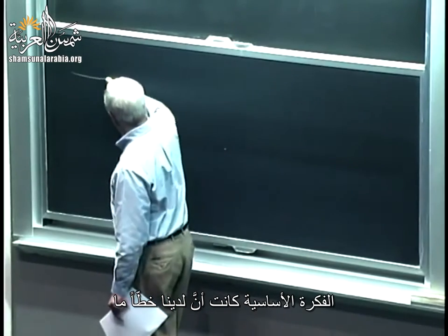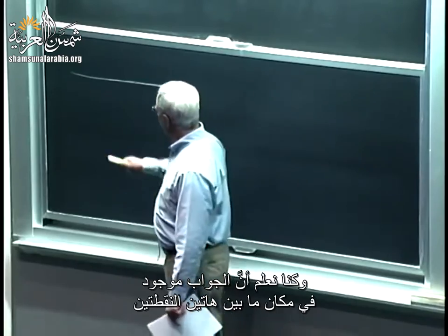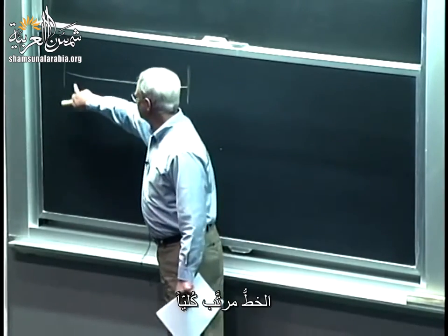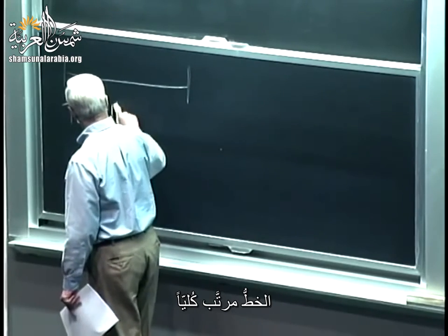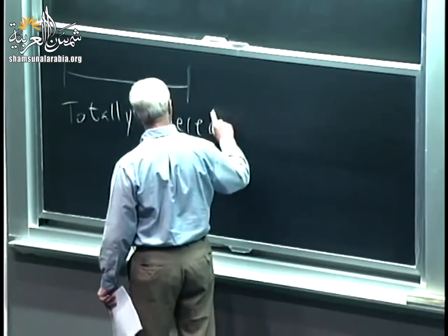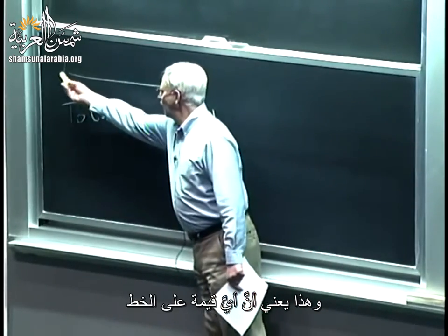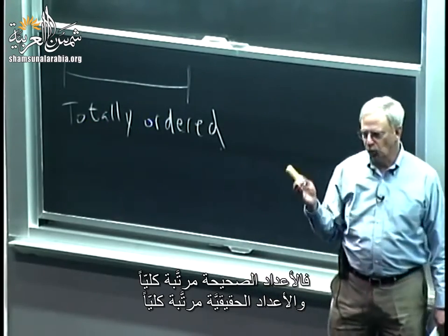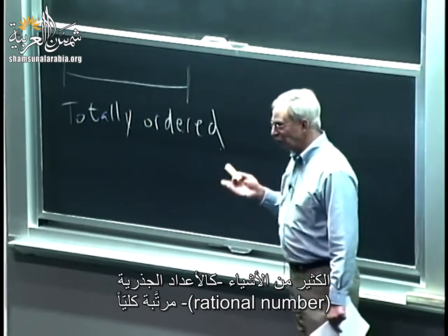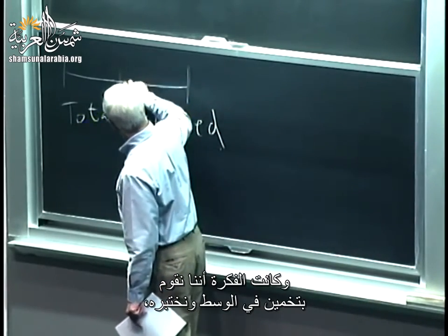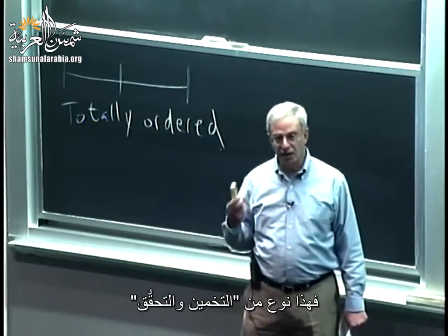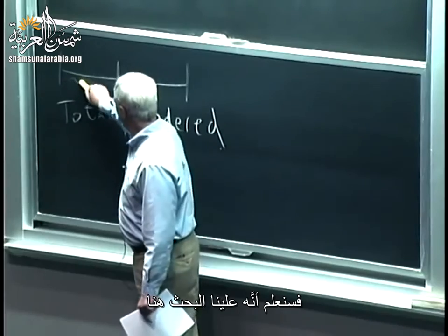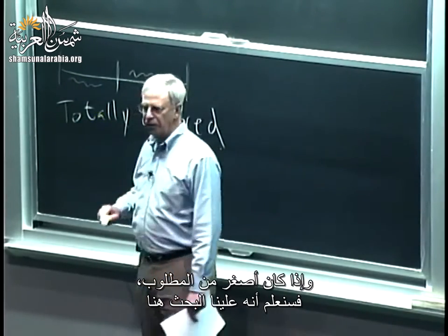The basic idea was that we had some sort of a line, and we knew the answer was somewhere between this point and this point. The line is totally ordered, and what that means is that anything here is smaller than anything to its right. So the integers are totally ordered, the reals are totally ordered, the rationals are totally ordered. The idea was we'd make a guess in the middle, test it — a guess and check. If the answer was too big, we'd look over here; if too small, over here — then repeat.